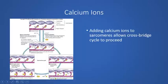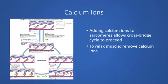So if adding calcium to the sarcomeres allows the cross-bridge cycle to proceed, logically the way to counteract contraction — which would be relaxation — is to remove those calcium ions. With the calcium ions removed, the tropomyosin slides back over the myosin binding sites, the cross-bridge cycle is interrupted, and the muscle is no longer generating force: it is relaxed.